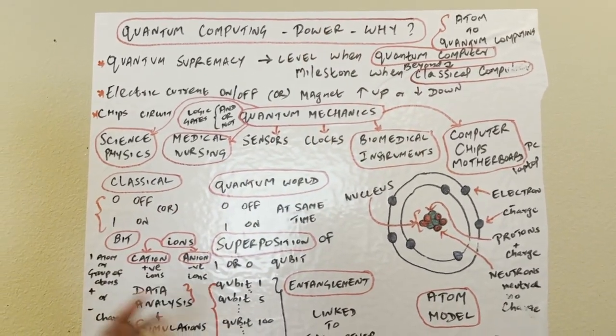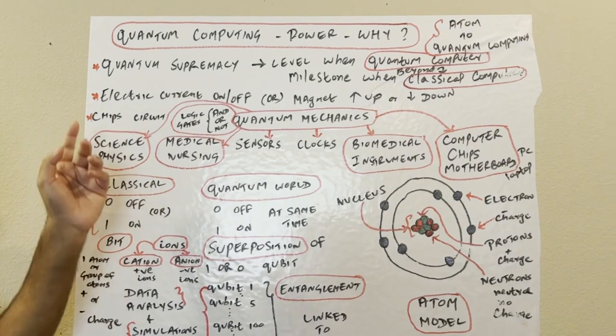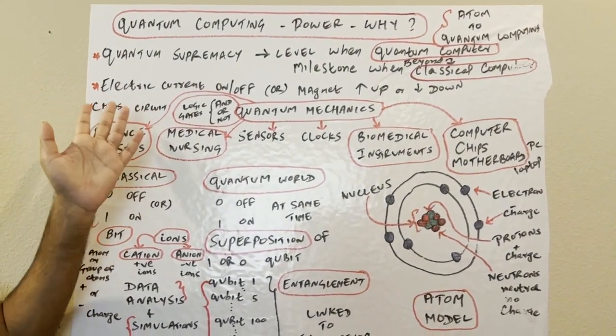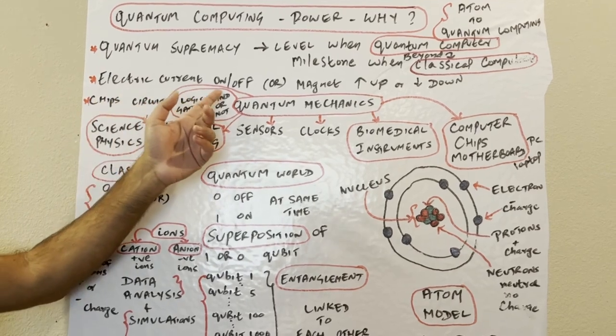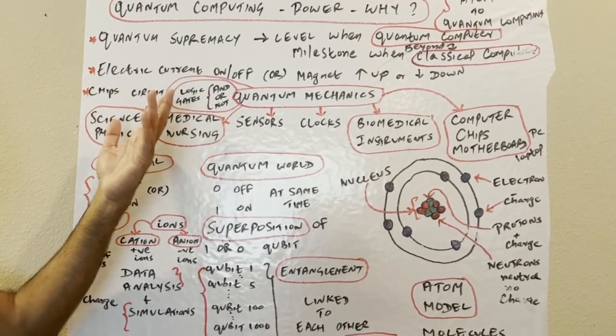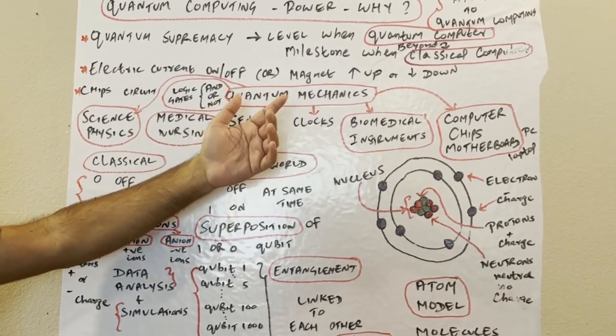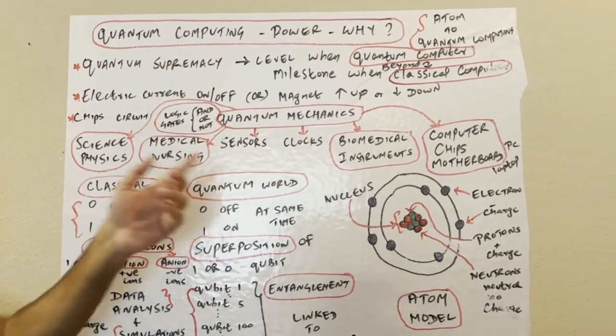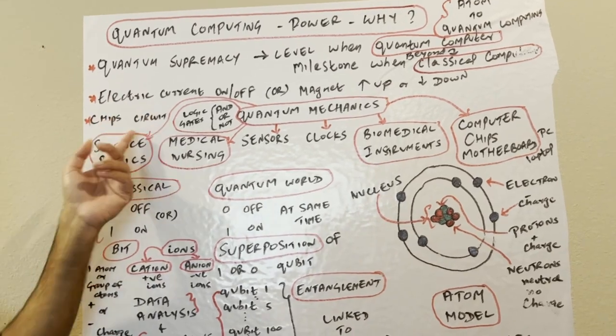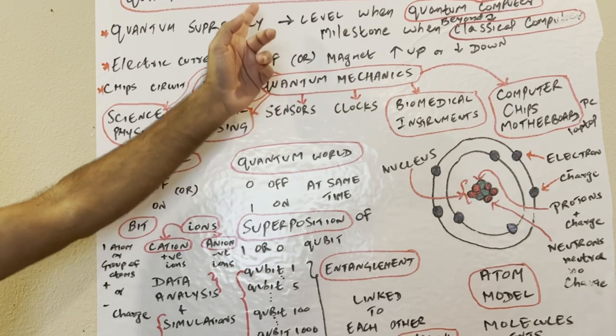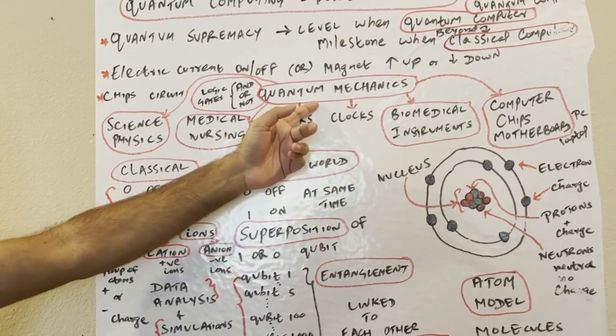In the previous video, I explained about on and off. It's all electric current, either it's connected or not connected. The light is on or off. In magnet language, you can say magnet is up or magnet is down. It's all chip circuit, motherboards and chip circuits. Quantum computing is derived from quantum mechanics.